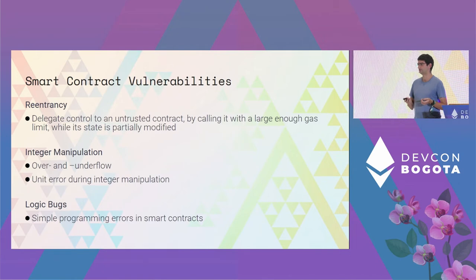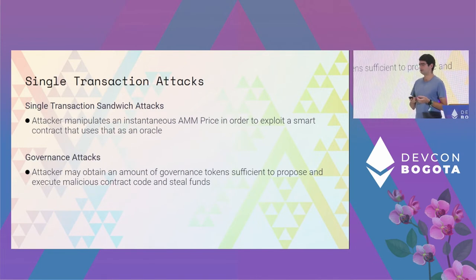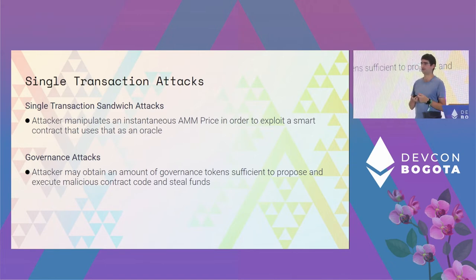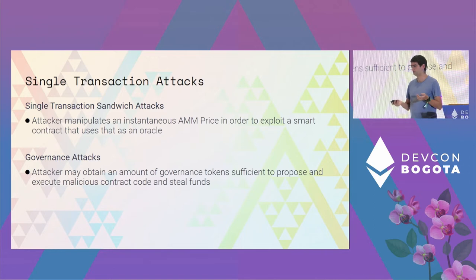Smart contract vulnerabilities include reentrancy, integer manipulation, and logical bugs — all now quite well studied. There are also single-transaction sandwich attacks, where if a protocol uses the spot price of an AMM as an oracle, an attacker could imbalance that AMM so the protocol gets the wrong price and the attacker exploits this to make money.